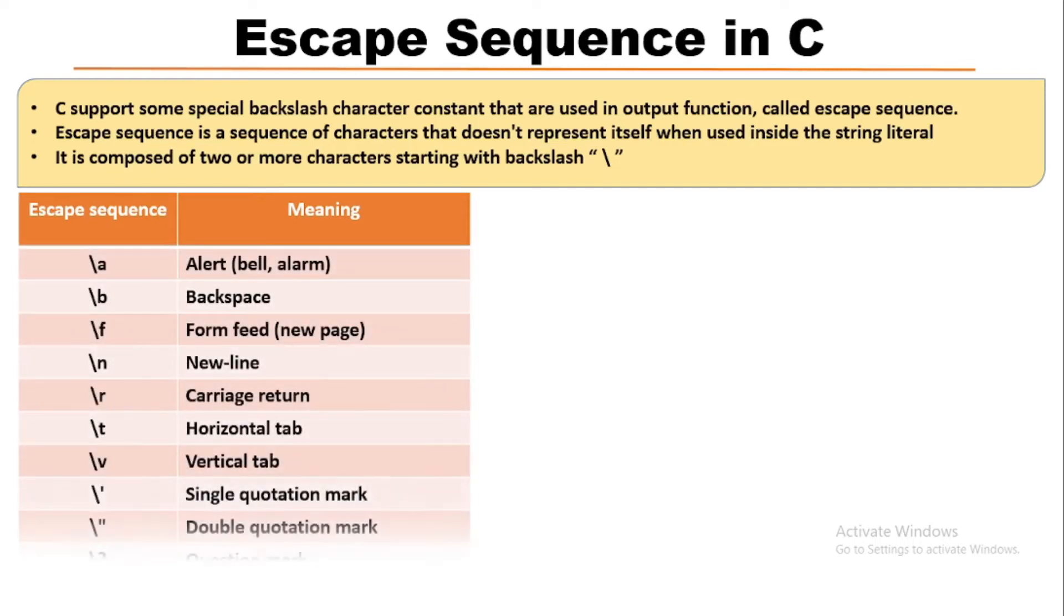First is backslash a which produces a beep sound for alert purposes. Then backslash b, i.e., backspace, which moves the cursor to the previous position of the current line. Next is backslash f, i.e., form feed, which moves the cursor to the initial position of the next logical page. Then backslash n, i.e., newline, which moves the cursor to the beginning of a new line.